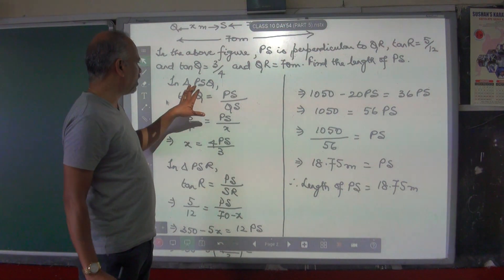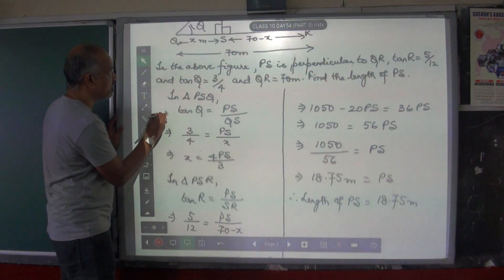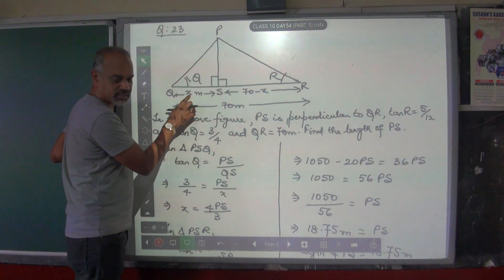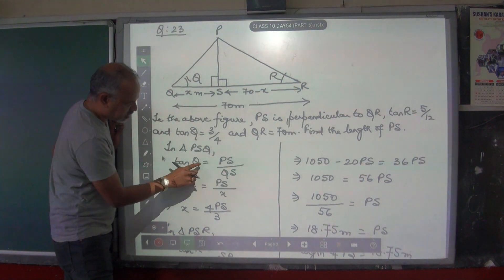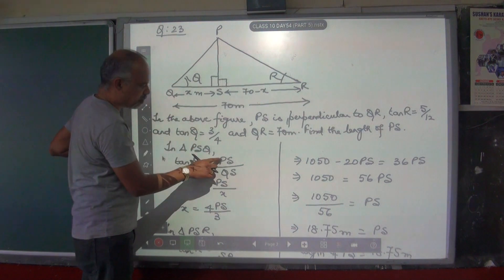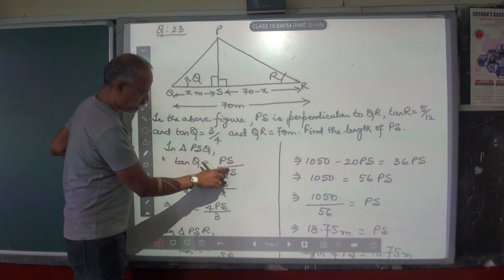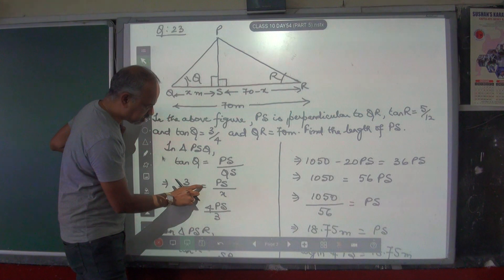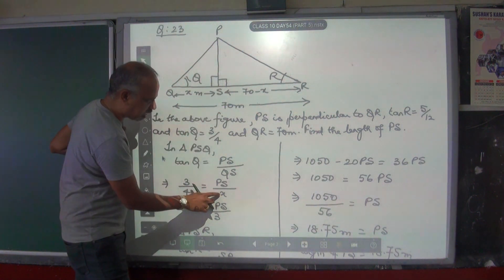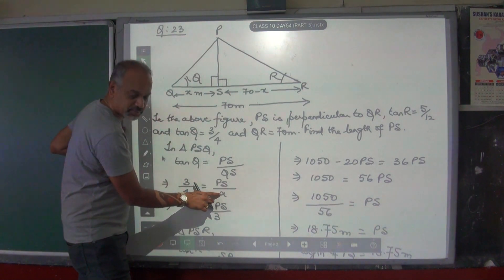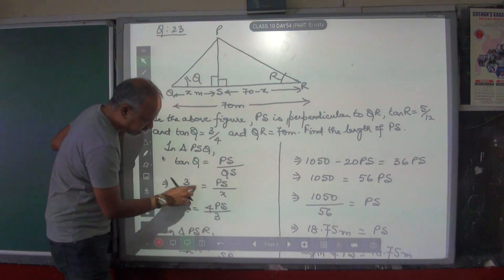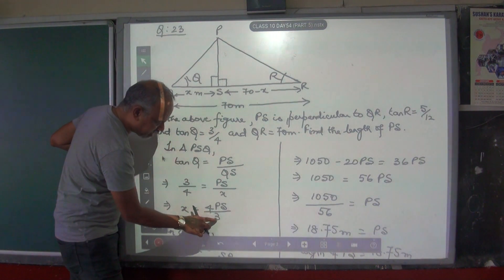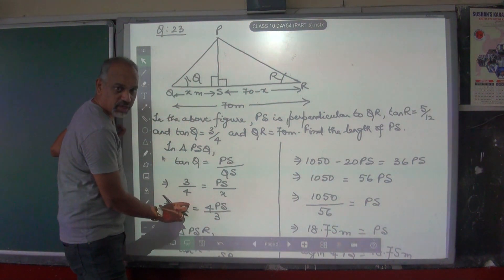Taking the first triangle, in triangle PSQ, the angle here is Q and the base is X. So tan Q is equal to perpendicular PS divided by base QS. Tan Q's value was given in the question — tan Q is 3 by 4. So 3 by 4 is equal to PS divided by X. Bring X to this side: X is equal to 4PS divided by 3. This is what you get from the first triangle.